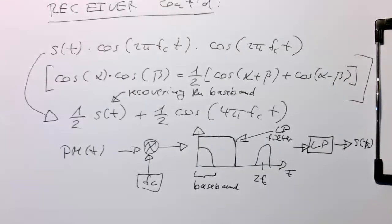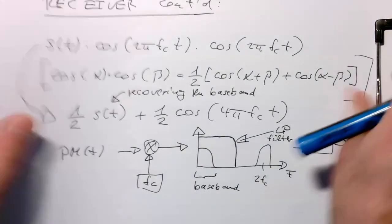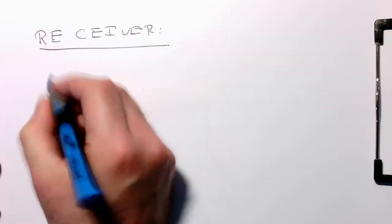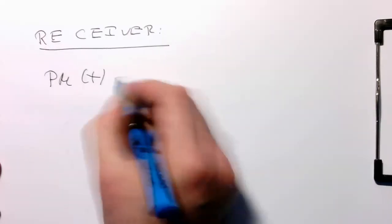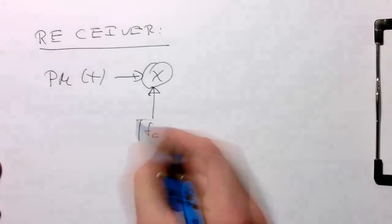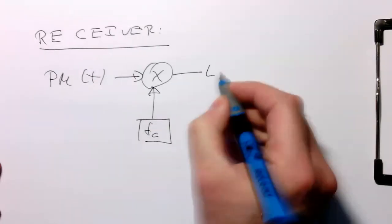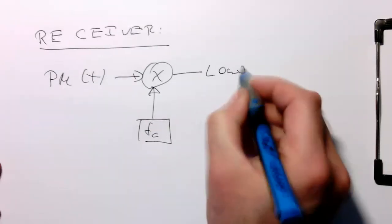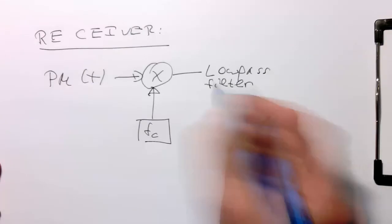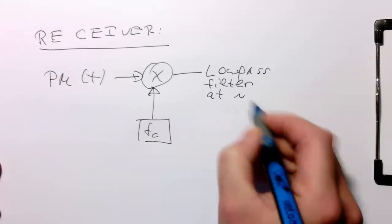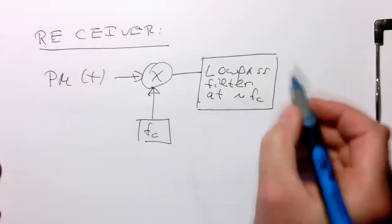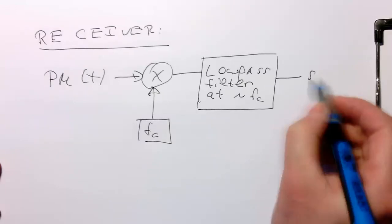Very elegant solution. The whole receiver: we have our phase modulated signal, use a multiplier with our carrier frequency, then apply a low-pass filter at approximately fc cutoff frequency. The output is our s(t).